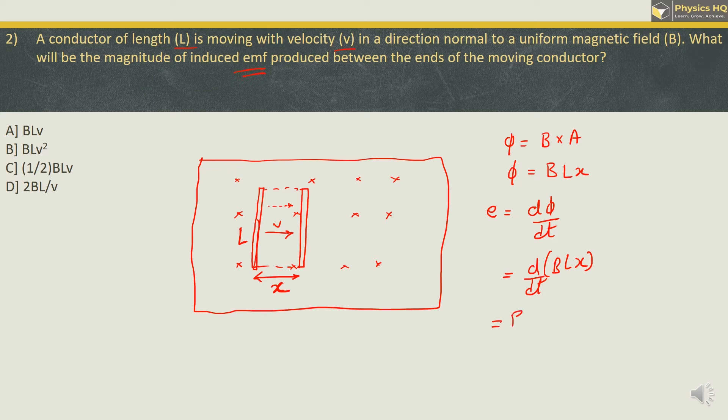So we will take them outside and what we are left with is dX/dt. Now X is displacement over here or distance which is moved. And rate of change of distance or displacement is nothing but velocity. So we can write E is equal to BLV. Therefore, the correct option is option A. Hope you all understood this.